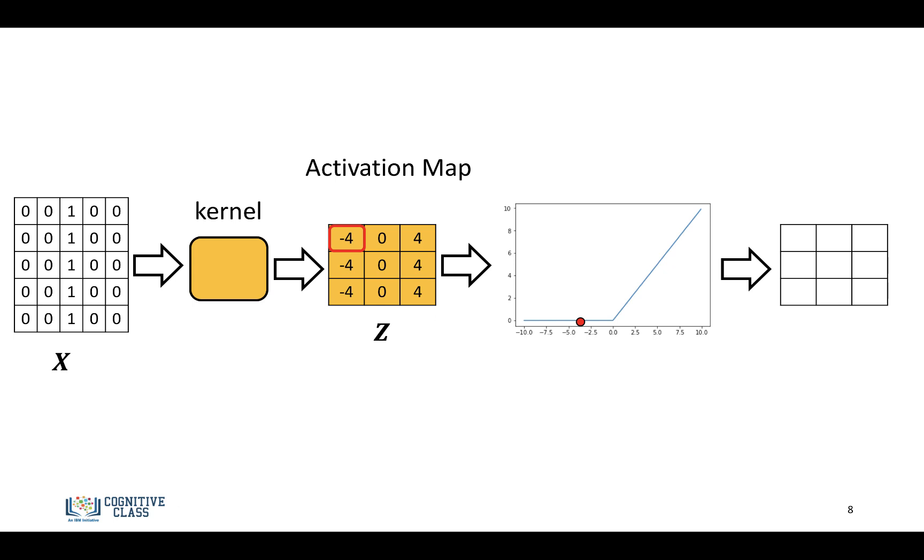For this quadrant over here, we have a negative 4, and we'll apply the ReLU function. In this case, we'll get a 0. And let's do these two terms over here. In both cases, they're negative 4, so we get a 0. And let's do these three terms in one shot. We apply the ReLU function, and we get a bunch of 0s.